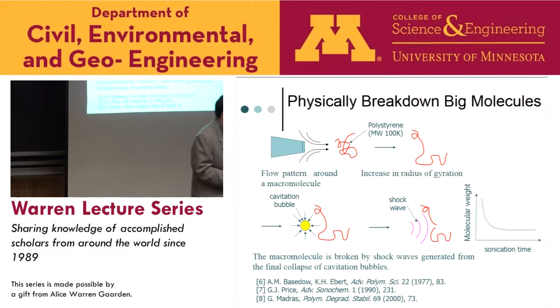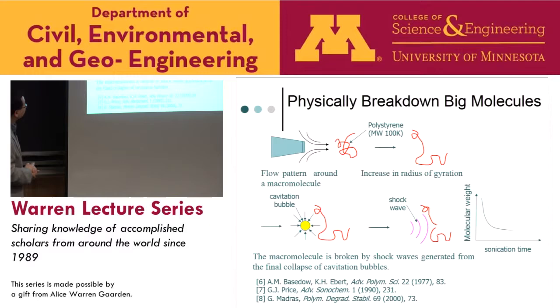Another important physical effect of ultrasound is that it can physically break down big molecules. Using polystyrene as an example — which also applies to natural organic matter — the acoustic streaming and turbulence generated by ultrasound can open up the gyration of the polymer, increasing the radius of gyration. Once a cavitational bubble collapse occurs close enough to the macromolecule, the shock wave at the moment of collapse can break the covalent bonds of the macromolecule, and radical species are observed after bond cleavage.